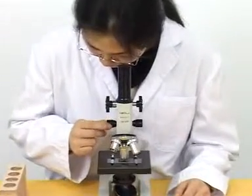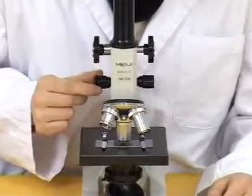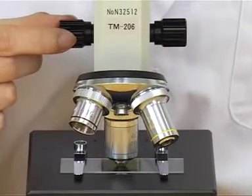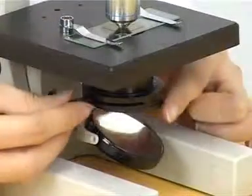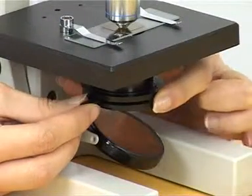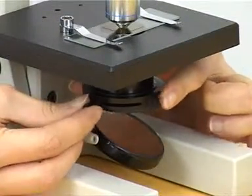Raise the body tube slowly by turning the fine adjustment knob until the image comes into focus. Adjust the diaphragm and condenser again for optimum lighting.